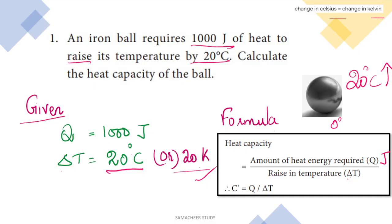The iron ball's temperature is raised by 20 degrees centigrade. This rise in temperature occurs because we add heat energy, and that heat energy value is 1000 joules. So first, we will write the given information: heat energy required, Q, is equal to 1000 joules, and the rise in temperature is 20 degrees centigrade.